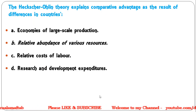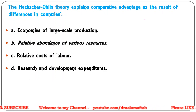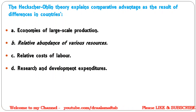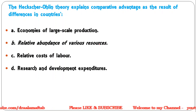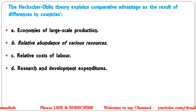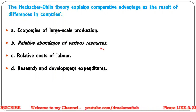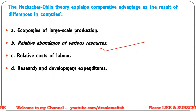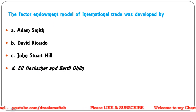Next: The Heckscher-Ohlin theory explains comparative advantage as the result of differences in countries' — economies of large-scale production; relative abundance of various resources; relative cost of labor; research and development expenditure. Correct answer: relative abundance of various resources.